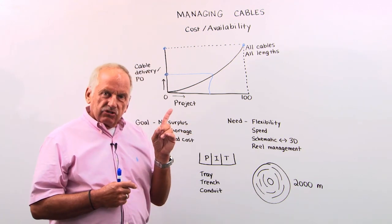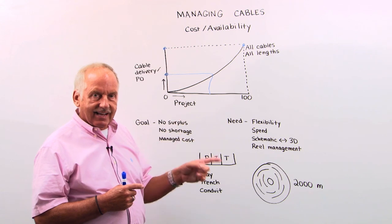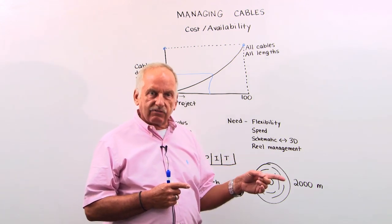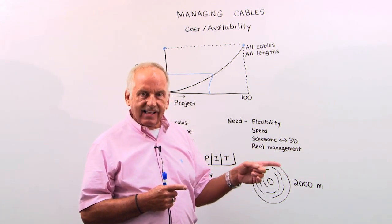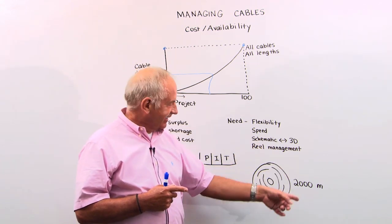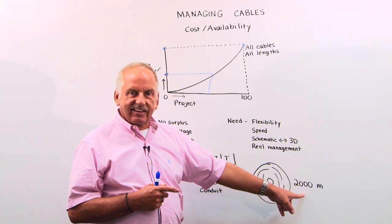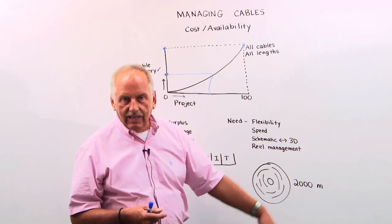Now, the other challenge that you have, of course, these cables are not coming in exactly the length that you have specified in the design. They're coming on these standard reels. This is the artistic impression of a reel, if they have some imagination here. And let's say that the standard length on this particular cable is like 2,000 meters.